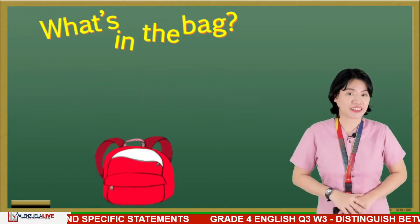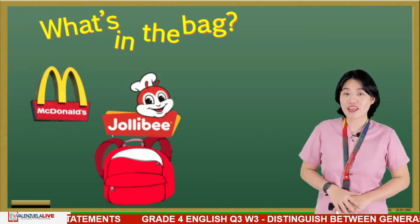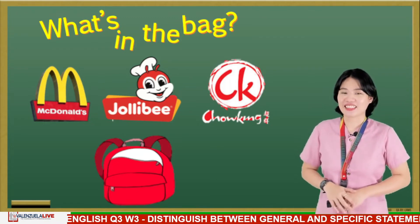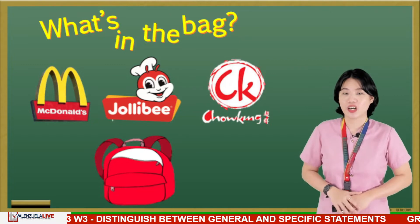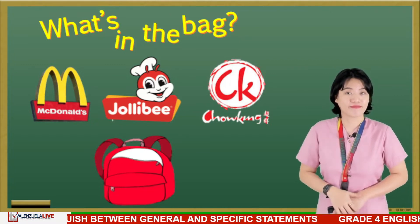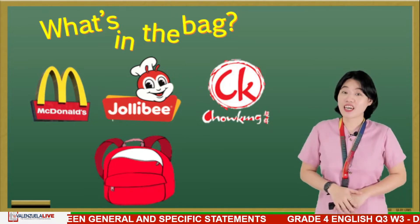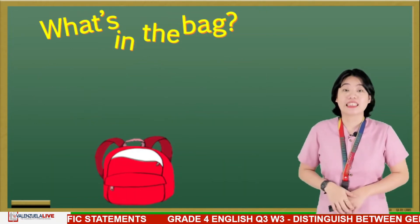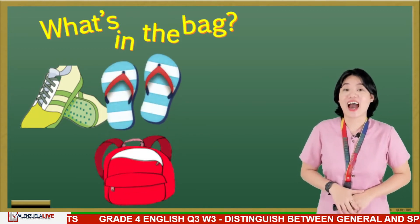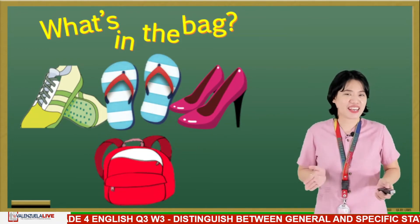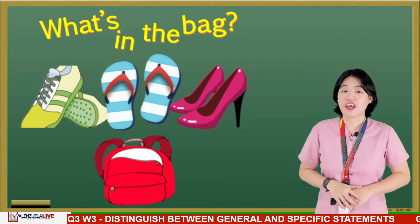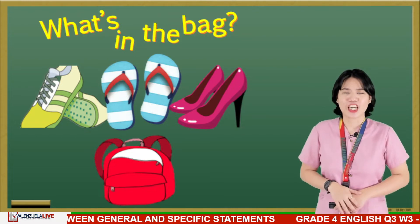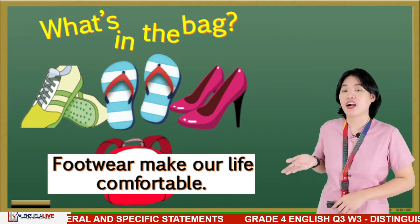What's in the bag? McDonald's, Jollibee, and Chowking — what are they? Right, they are fast food restaurants. What do you think is the main idea? It could be: fast food restaurants are found everywhere. What's in the bag? Sneakers, slippers, and high heels — what are they? Correct, they are footwear. What could be the main idea? It could be: footwear makes our life comfortable.